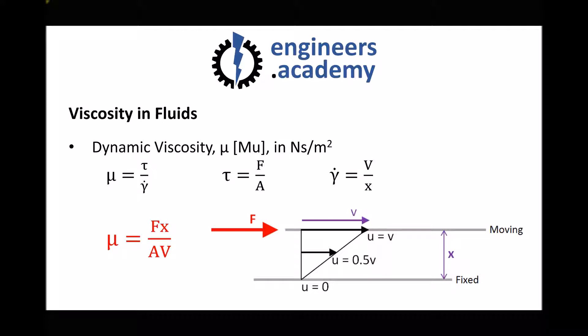Dynamic viscosity is force times separation distance over plate area times velocity. The higher the viscosity, the larger the force that needs to be applied. Or thought of another way, the higher the dynamic viscosity, the lower the velocity of the top plate relative to the bottom plate.